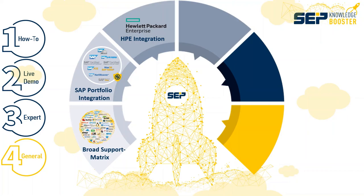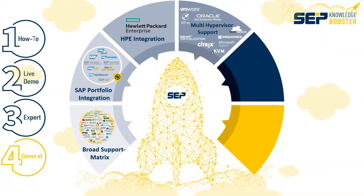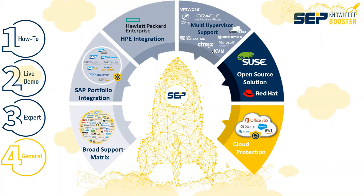Third, we focus on our partnership with HPE. We have just released our HPE certified Catalyst integration, including Catalyst Copy and Cloud Bank Storage — more to come soon. Fourth, we are proud of our multi-hypervisor support: supporting more than eight hypervisors, we are a perfect fit into every virtual environment beyond VMware and Hyper-V. From our Unix and Linux history, we have a strong focus on open source, with partnerships with Red Hat and SUSE, and agents for KVM, MariaDB, and PostgreSQL.